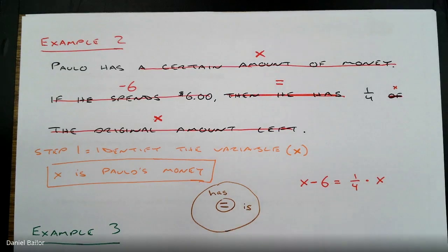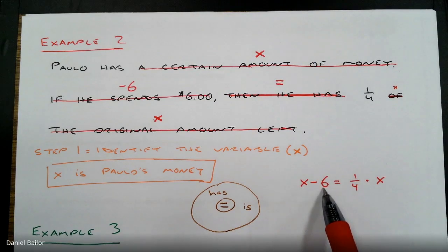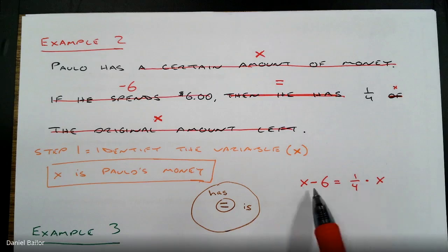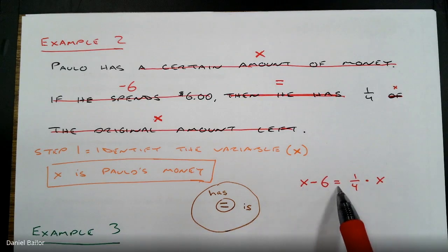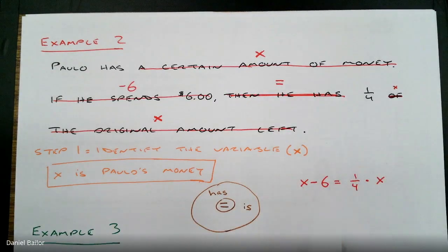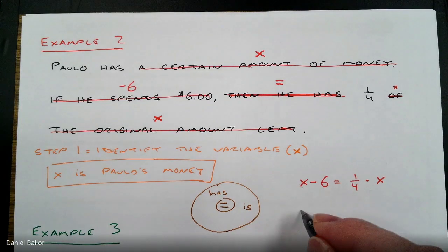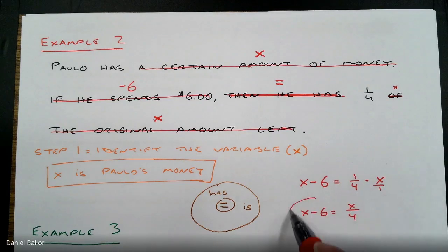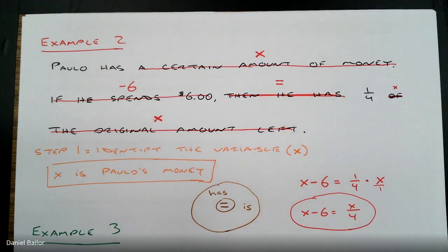So our equation is x minus six equals one-fourth times x. Paolo's money is x; he spends six dollars; after spending six dollars, he has one-fourth of the money he started with. We took a long English sentence and turned it into a shorter math equation. You can rewrite it as x minus six equals x over four. That is how we translate from English into math.